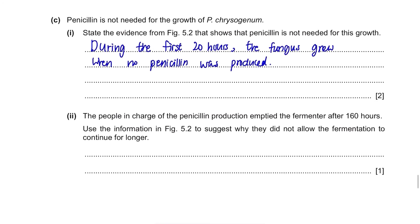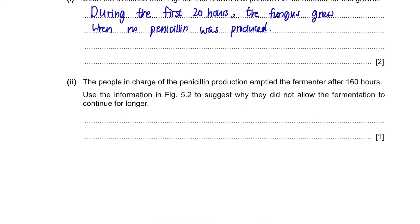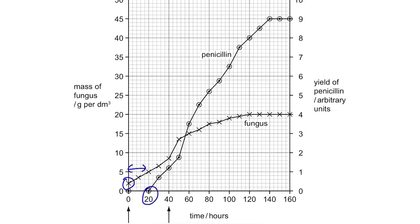Next: the people in charge emptied the fermenter after 160 hours. Use this information and figure 5.2 to suggest why they did not allow fermentation to continue for longer. After 120 hours, there was no increase in fungal mass, and penicillin stopped being produced after 140 hours. So there was no reason to keep waiting for it to increase or grow.